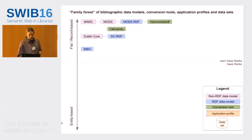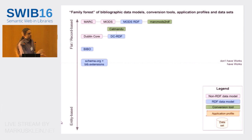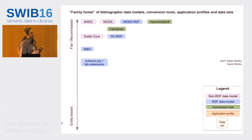Then there's BIBO — the Bibliographic Ontology — which is also a fairly flat model, mostly oriented around scientific publishing. There's also the special case of the schema.org model, which tries to model quite a lot of everything, including creative works and other bibliographic things. You can use it either as a flat model or use some of the bibliographic extensions to separate out works and instances, so it's sort of in the middle.